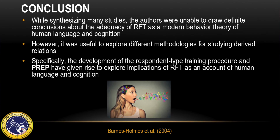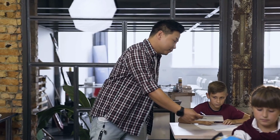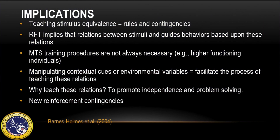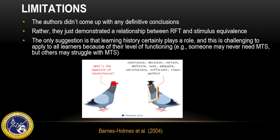Specifically, the development of the respondent-type training procedure and PREP have given rise to the implications of RFT as an account of human language and cognition, as well as the role of manipulating specific environmental or contextual cues. For certain learners, explicit match-to-sample training may not be needed. For other learners, teaching explicit relations can help establish rule-governed and contingency-based behavior. Using RFT and stimulus equivalence training for learners could promote independence and problem-solving skills, and can help learners contact new reinforcement contingencies. Learning history plays a very crucial role in derived relations. However, as explicitly stated in the article, subsequent research and investigation is required.